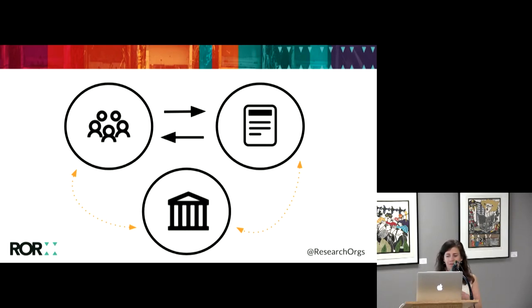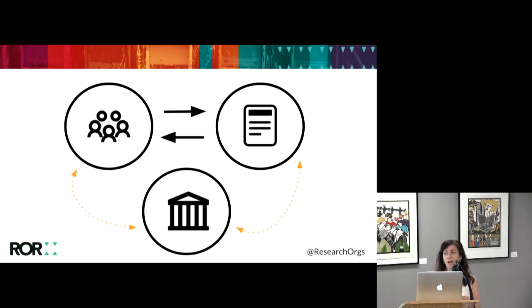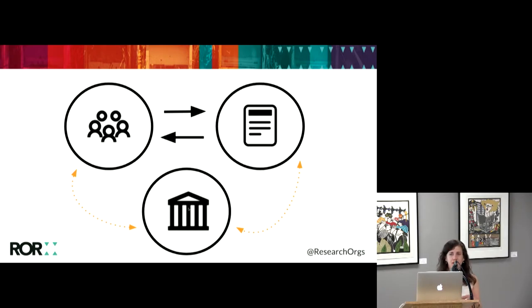We sort of have maybe three pieces of this puzzle in the world of scholarly publishing. In the upper left of the screen we have the people who are producing the research — who are publishing articles, creating and submitting data sets. In the upper right we have those outputs themselves: the data sets, articles, or presentations. And at the bottom we have the organizations or institutions where these people are affiliated.